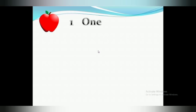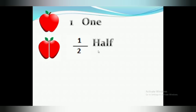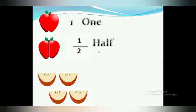This is one full apple — in numbers it is written as 1, and in spelling you write O-N-E. When you cut it into two equal parts, the numerical way of writing it is one upon two, which is called a half. When you have four equal parts of one apple, in numerical form you write one upon four — that is called a quarter. Each piece is a quarter piece.